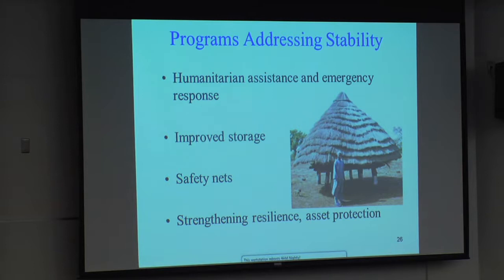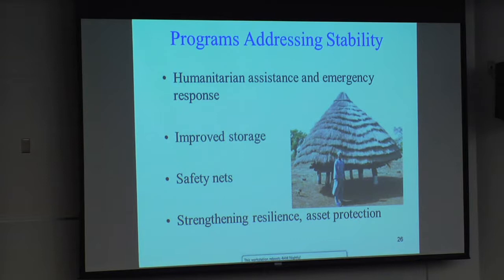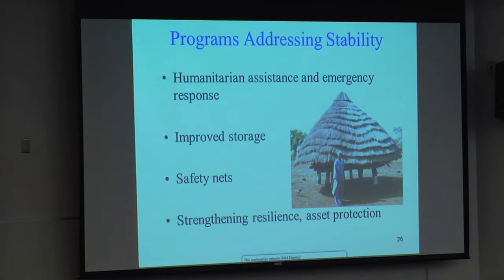Programs addressing stability — where people may have food now but there's always a risk of losing it during a shock. Emergency response and humanitarian assistance through food aid is probably the most important way food aid contributes to this. Other things include improved storage — USAID has programs to develop storage facilities so food doesn't get contaminated while being stored. Safety nets help prevent shocks from reducing food. And protecting assets — whether livestock or equipment that allows you to produce income — can help improve stability.